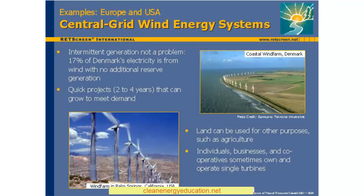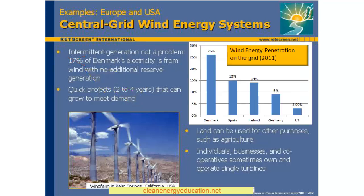Obviously, there is a limit to how much wind capacity can be installed on a grid. If wind turbines were the only form of generation on the grid, then there would be no electricity available during calm periods. But the experience of Denmark and parts of northern Germany indicates that this limit is, in fact, quite high. Seventeen percent of Denmark's electrical energy comes from wind power, and this has not required the construction of any additional spinning reserve — that is, capacity specifically meant to compensate for the output of the wind turbines. While the limit may be different in other parts of the world, there are few locations, if any, where the intermittent output of the wind turbines is presently a real obstacle to their profitable use.